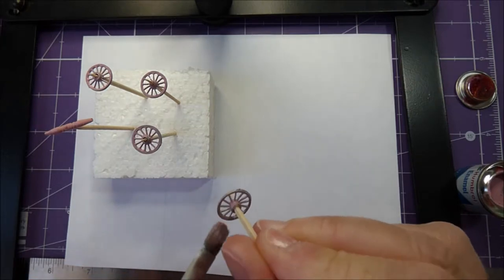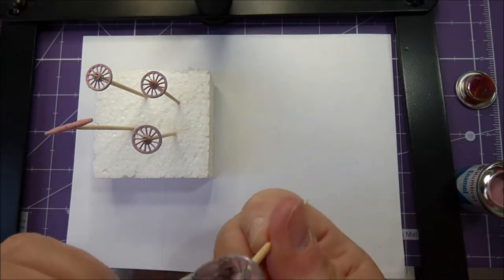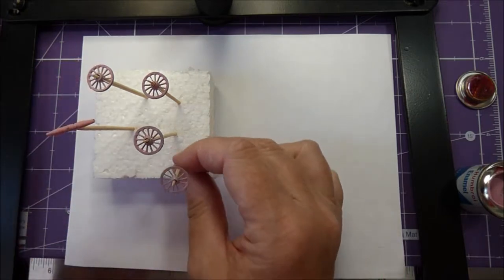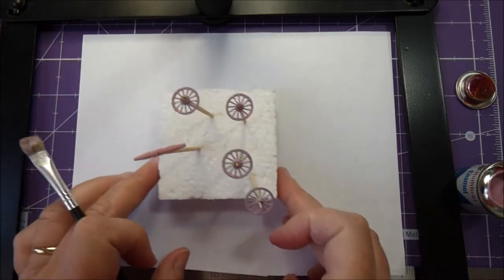You may need two coats of paint. Pop the cocktail stick into the polystyrene block and put them aside until they're dry.